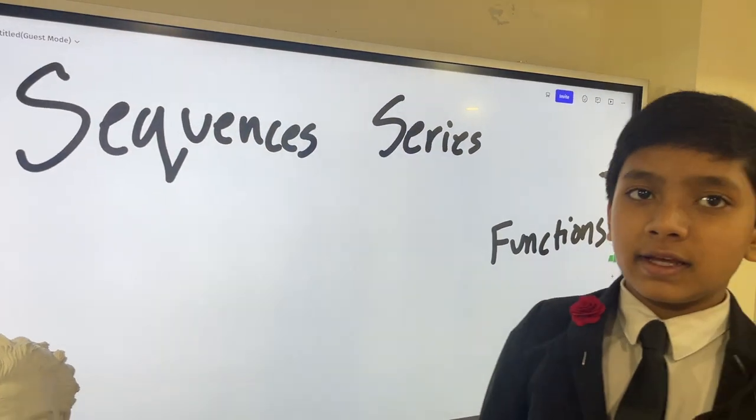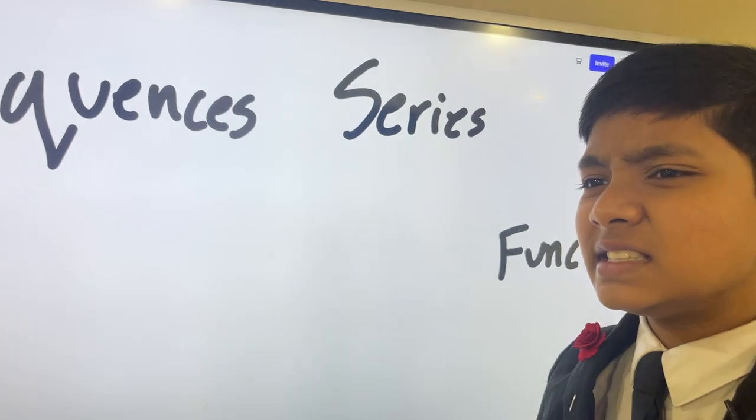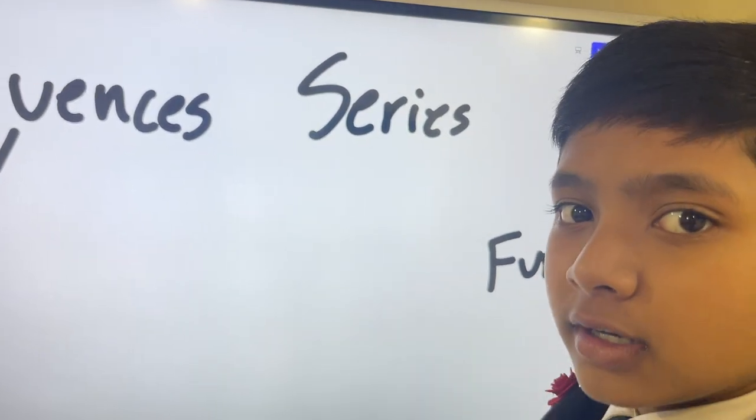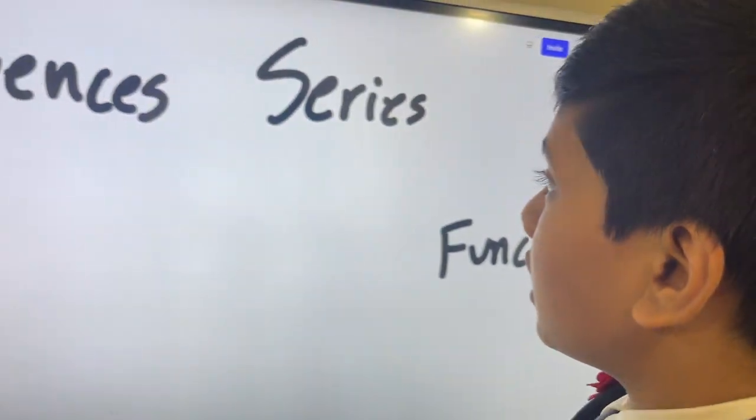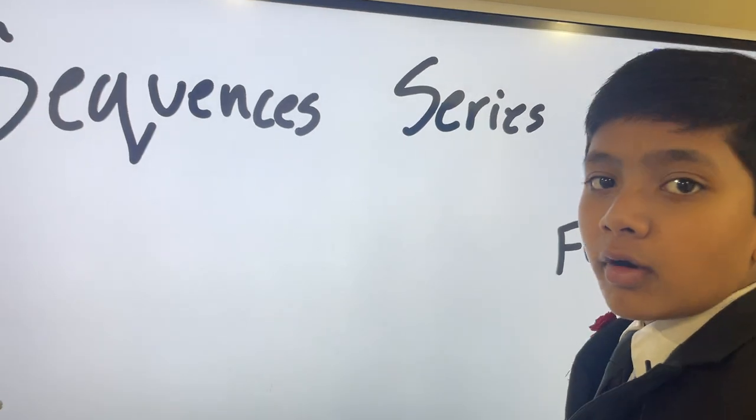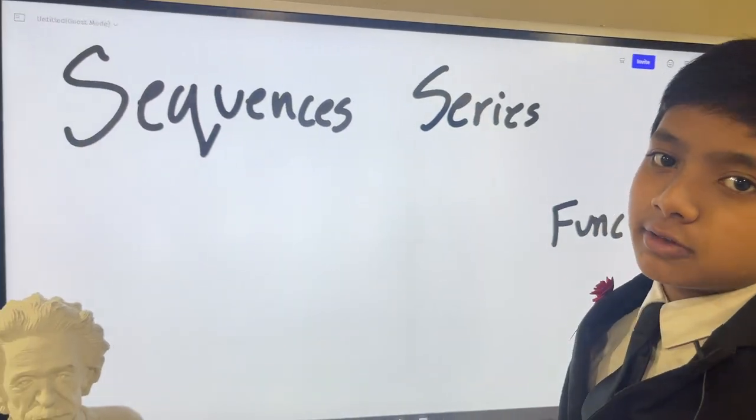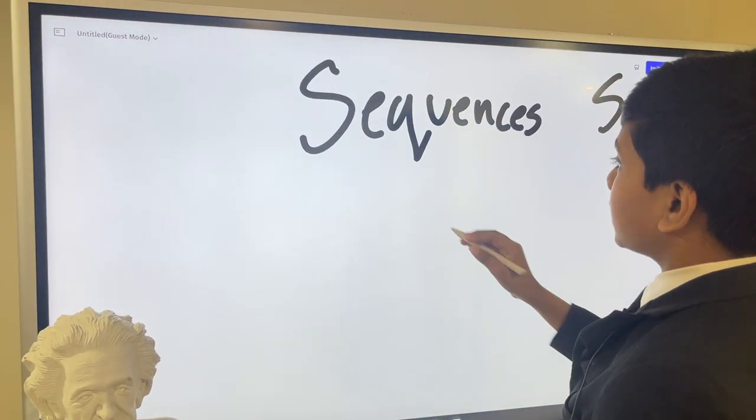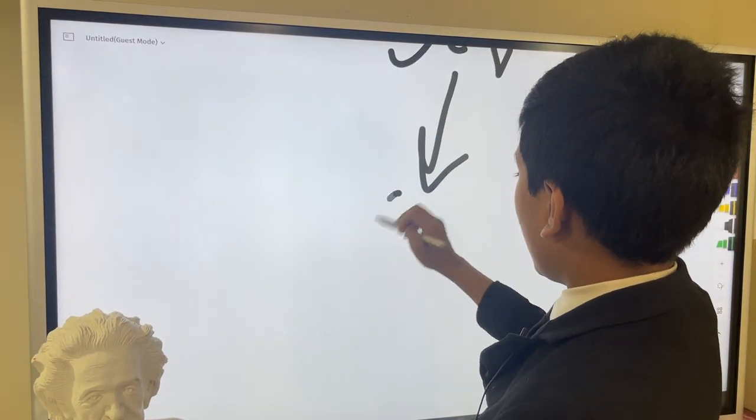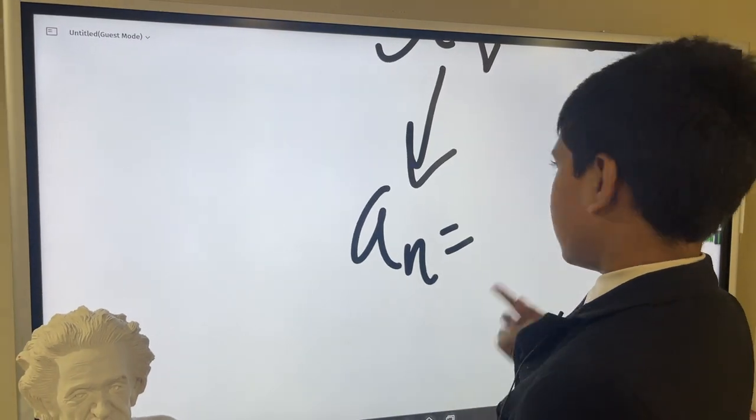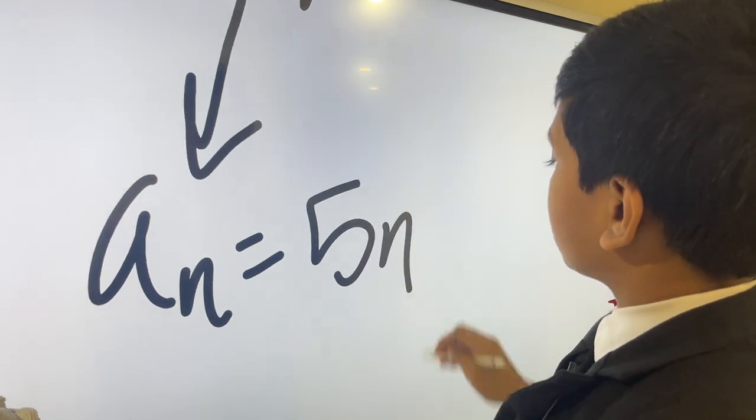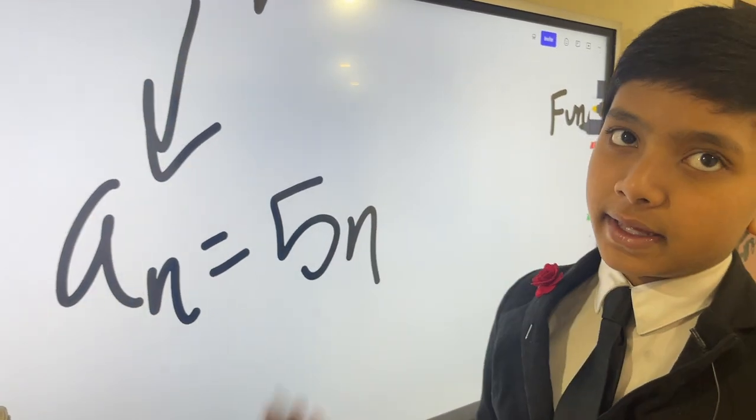A prerequisite for this is basically derivatives. You've got to know how to take derivatives and limits if you want to understand this, but that's not too bad of a requirement. So what are sequences and series? Well, they're pretty simple. Let's take a sequence like a_n equals 5n.